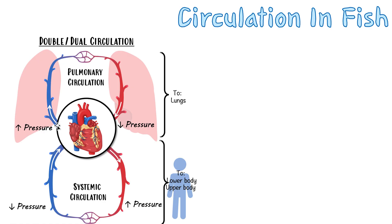The pressure increases again because the heart is pumping the blood out with high force. It slows down until we reach the lung capillaries, where gas exchange happens again — the blood gets reoxygenated, oxygen comes in from the lungs, and carbon dioxide leaves when we exhale. The blood pressure is really low again in the vein returning from the lungs back toward the heart.